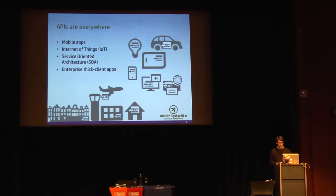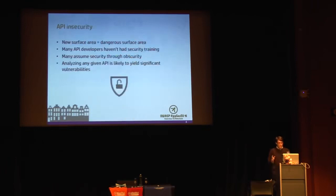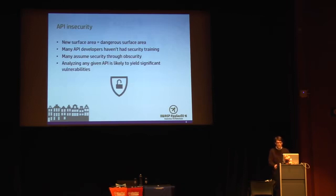We have all these things talking — our cars, our light bulbs as discussed in the keynote this morning, various mobile applications, airplanes, and even some toilets that have APIs for talking to back-end systems. So with all this new surface area, there's this huge dangerous area where security is being overlooked. As we rush to market with mobile applications and internet of things projects, security is often an afterthought.